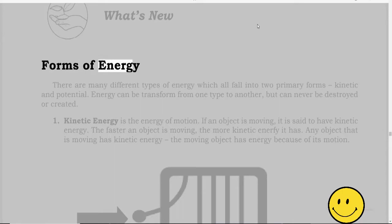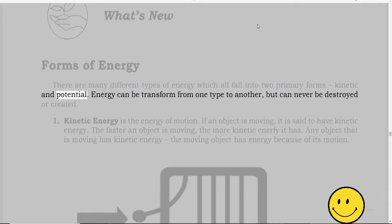Forms of Energy. There are many different types of energy which all fall into two primary forms, kinetic and potential. Energy can be transformed from one type to another but can never be destroyed or created.